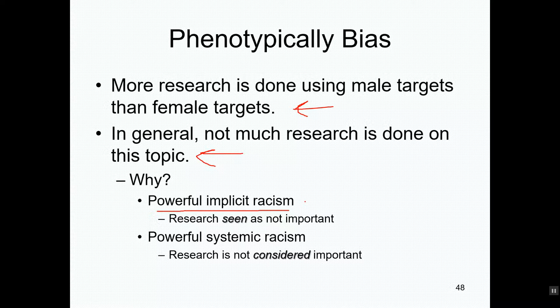They may not recognize among themselves that it is a reflection of their implicit racism. It could also be due to powerful systemic racism — the research is not considered consciously important because black people are considered different and white people are considered the standard. Grant institutions want to give money to research problems they think are important, and with wealth distributed as it is, white people are making decisions about what problems matter and may not see the phenotypicality bias as important.